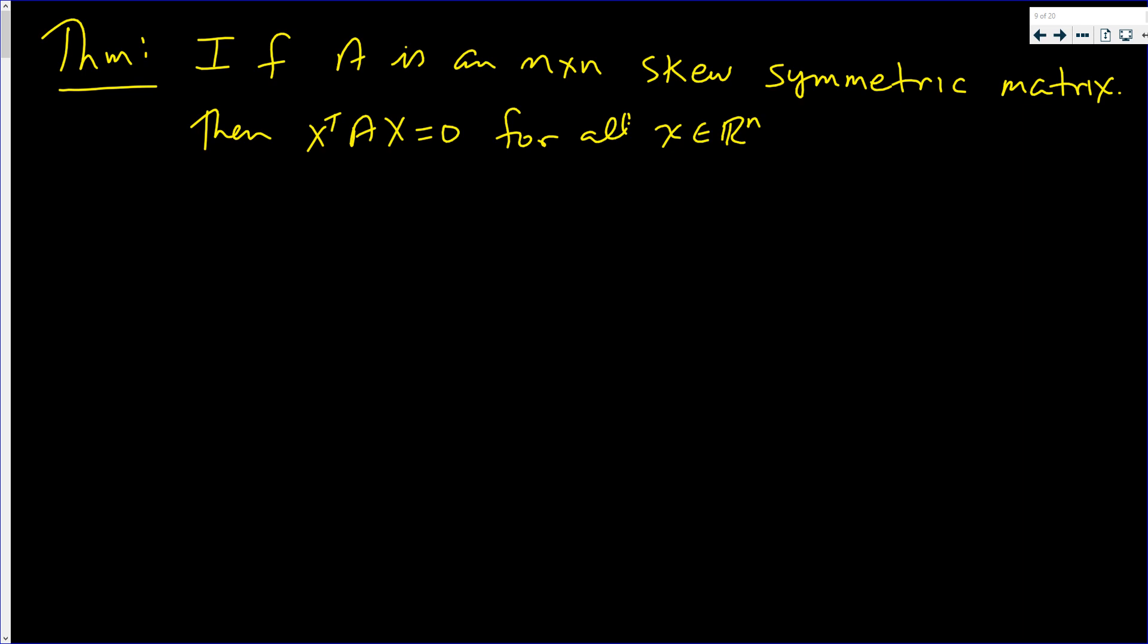In this video we want to prove the following theorem. If A is an n by n skew symmetric matrix, then x transpose A x equals zero for all x in R^n. So these x's are in R^n.